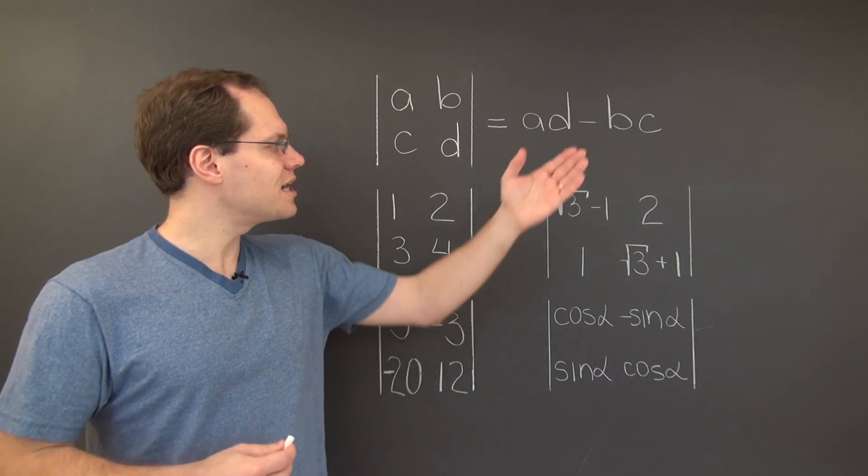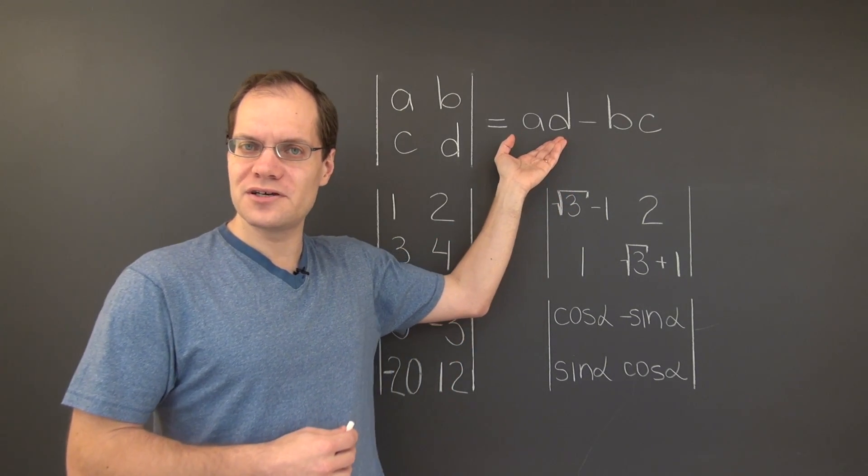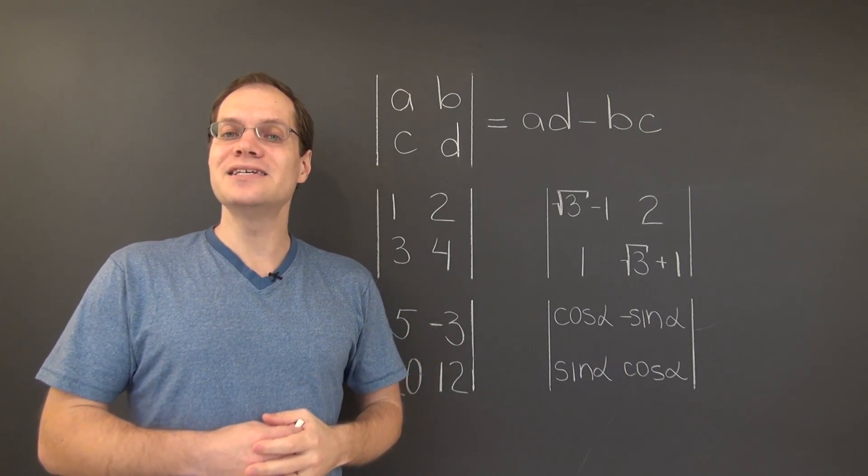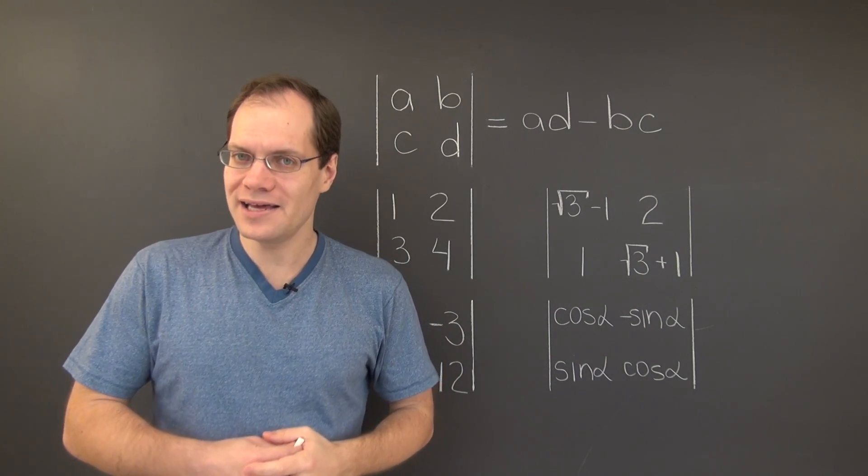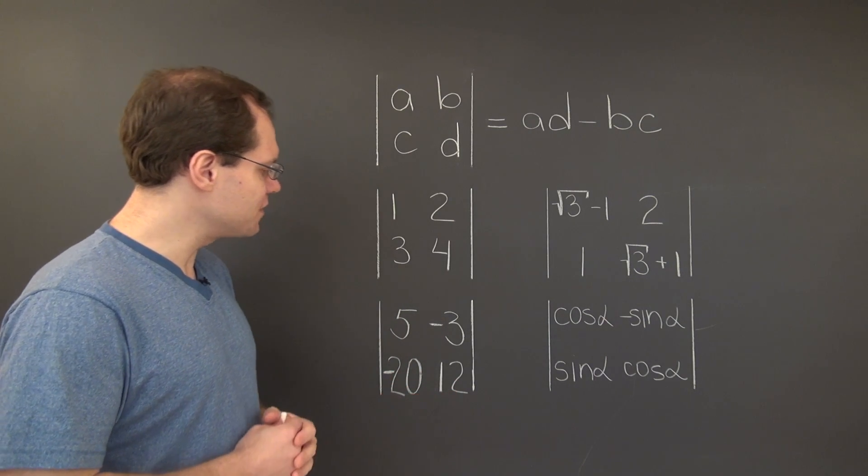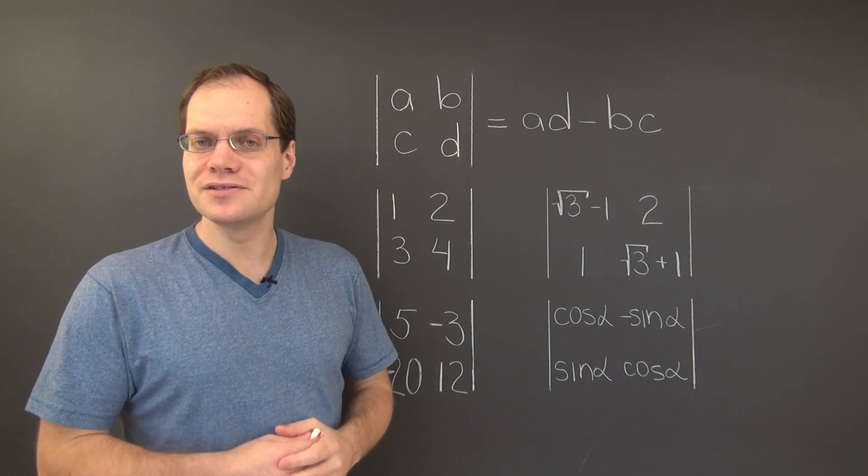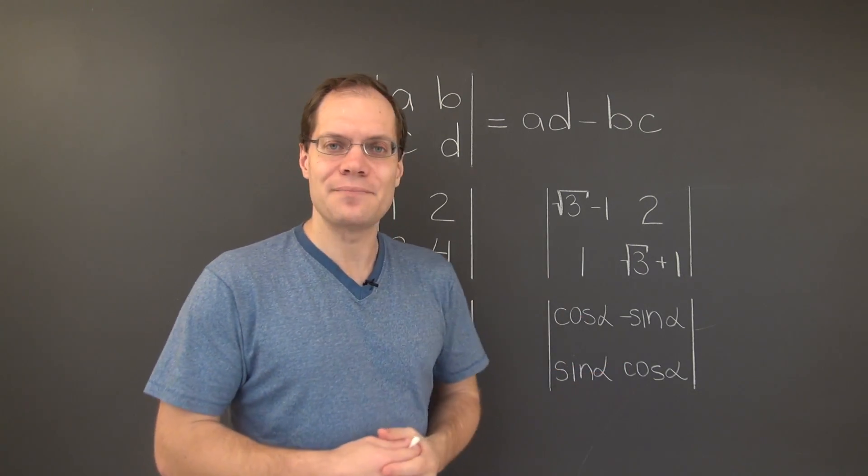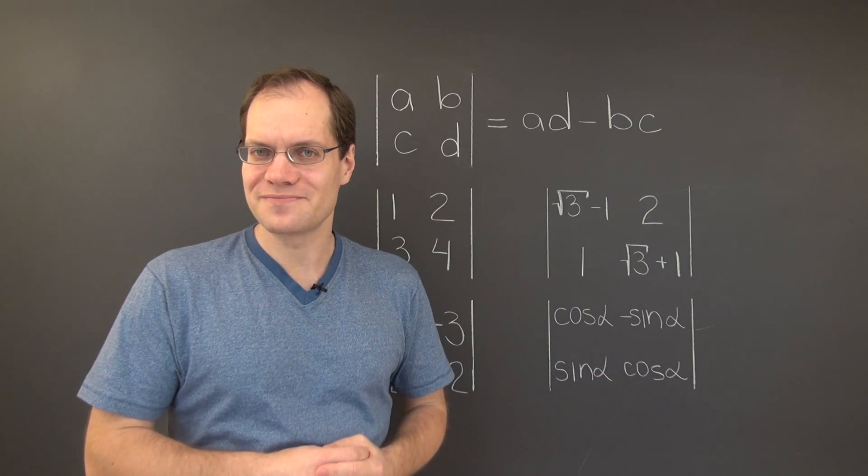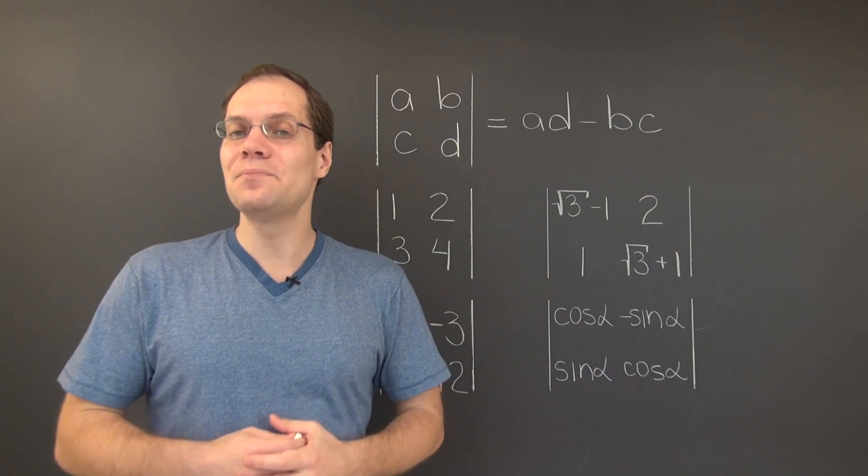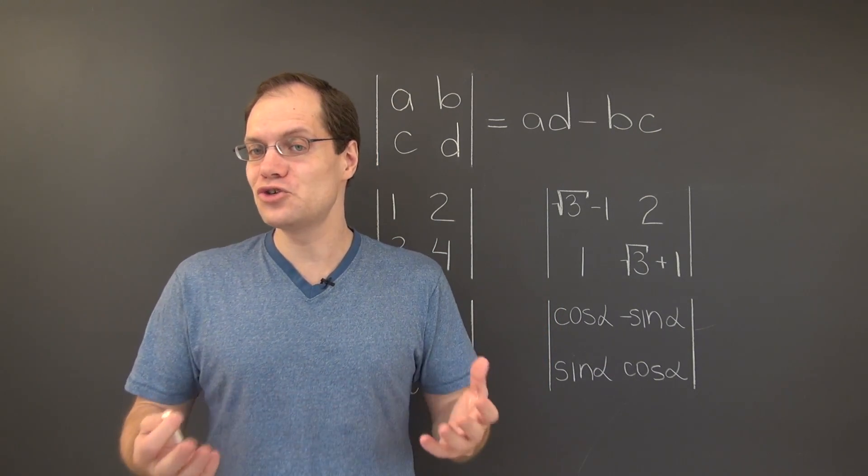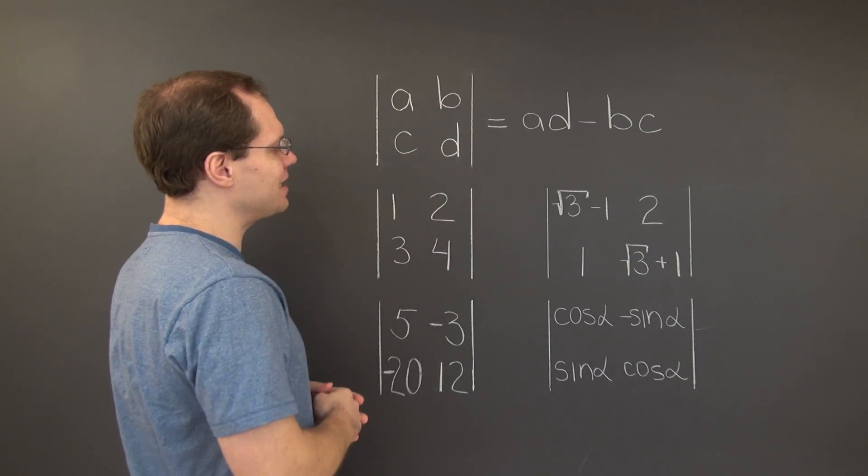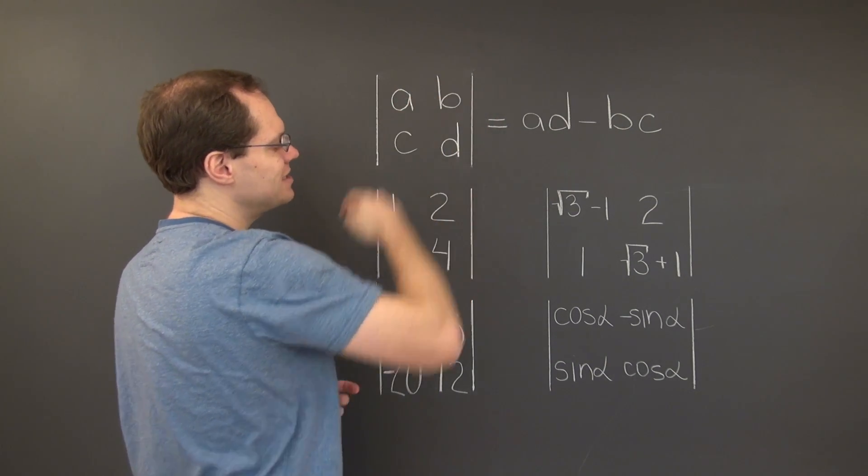In an earlier video, we discovered this well-known formula for the determinant of a 2x2 matrix. In this video, we'll practice applying this formula to four different matrices. The first two examples will be routine, but the other two will be quite interesting. There is nothing simpler than calculating determinants for 2x2 matrices. All you have to remember is this criss-crossing pattern, AD minus BC.